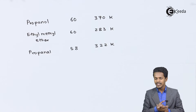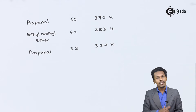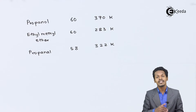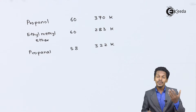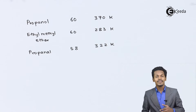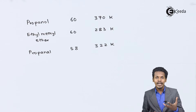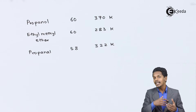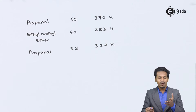The reason behind the higher boiling point of alcohol is hydrogen bonding and van der Waals forces of attraction. The alcoholic oxygen is more electronegative, which gives it the capacity to form hydrogen bonding with other alcohol molecules.